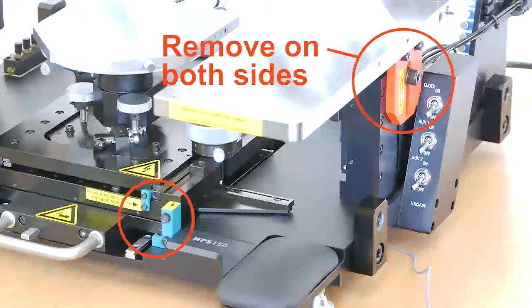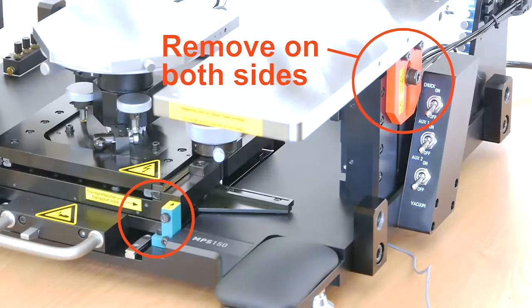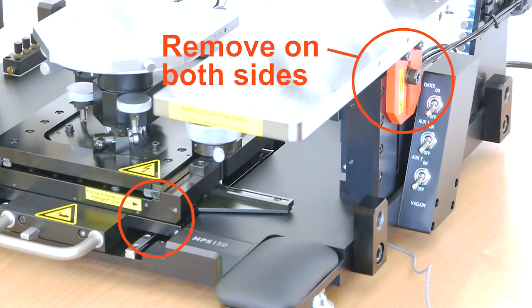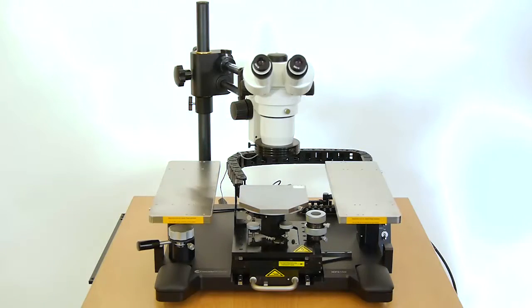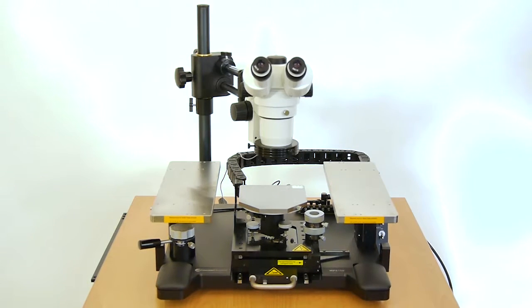After setup the probe station, remove the transport locks which secure the chuck stage and the plate movement. Now the EPS150 base station is ready for test. For setup the accessories, please see the quick reference guide.